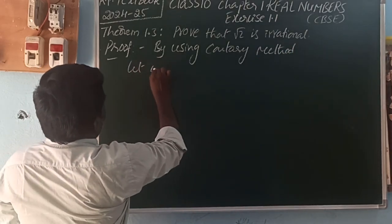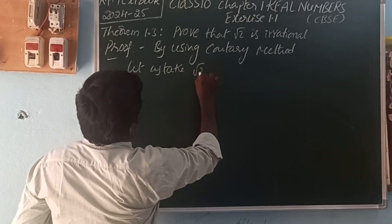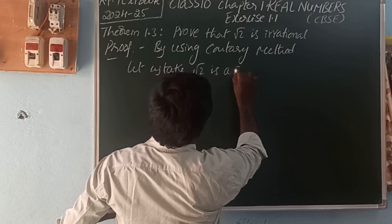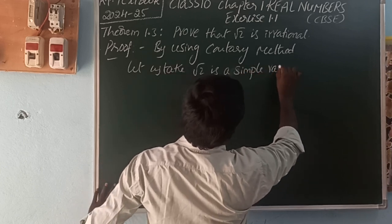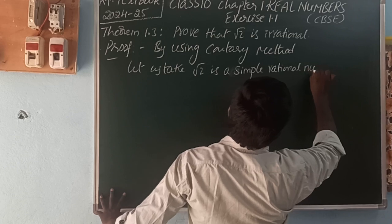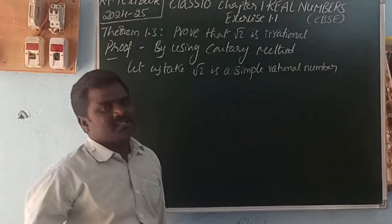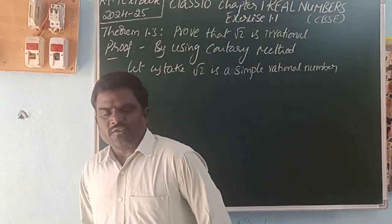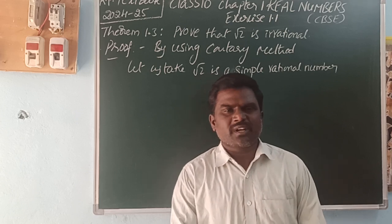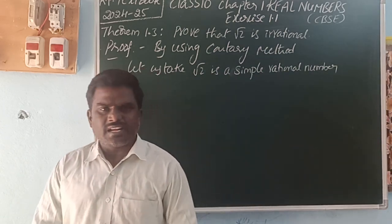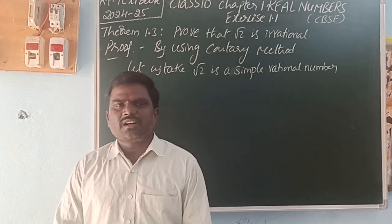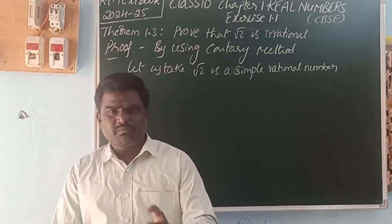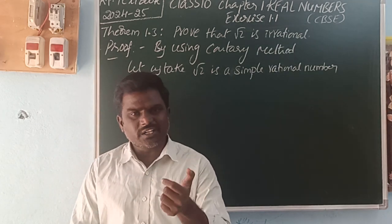So, let us take root 2 is a simple rational number. What is called a simple rational number? A number which is in the form of p by q, where p and q are co-primes — there is no common factor between the numerator and denominator. Q is not equal to 0. That number is called a simple rational number.